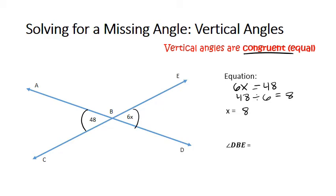Next step is to actually find that missing angle. So if DBE is 6x, then in this case 6 times 8 would give me 48. And so I'm noticing 48 is the same here as 48 over here, and again that makes sense. I should be checking my answers to make sure that they're reasonable.